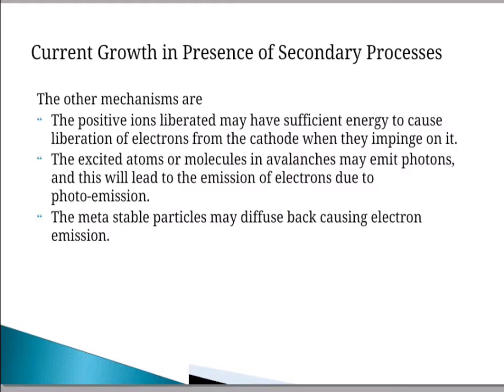The secondary ionization coefficient gamma is defined in the same way as alpha, as the net number of secondary electrons produced per incident positive ion, photon, excited particle, or metastable particle. The total value of gamma is the sum of the individual coefficients due to the three different processes: gamma equals gamma1 plus gamma2 plus gamma3. Gamma is Townsend's secondary ionization coefficient and is a function of gas pressure P and E/P.